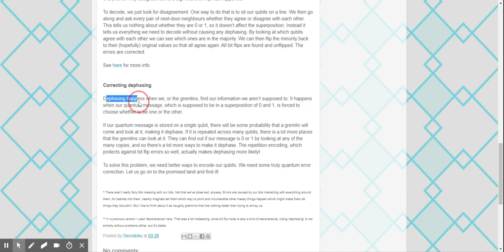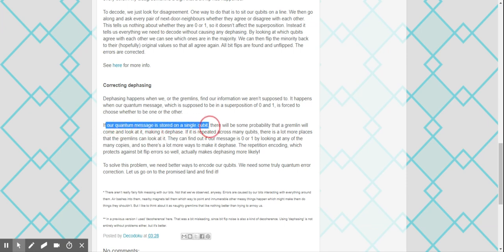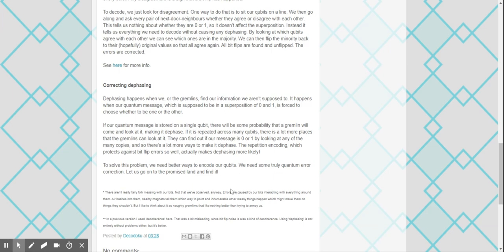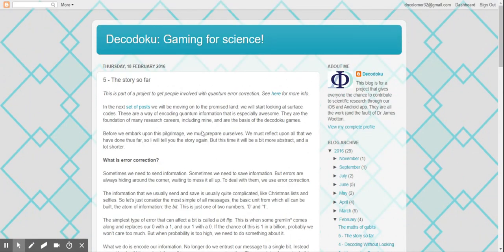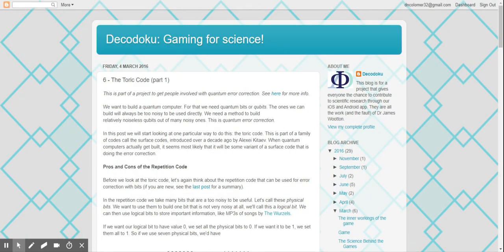Basically you need to be able to detect those situations and correct them by kind of then reapplying gates, I guess. Defacing happens when we learn information we aren't supposed to. If our quantum message is stored in a single qubit, there will be some probability that a gremlin will come and look at it, making it dephase. If it is repeated across many qubits, there is a lot more places that the gremlins can look at. The repetition encoding which protects against bit flips actually makes the defacing more likely. We need some truly quantum error correction. Let's go to the promised land and find it.